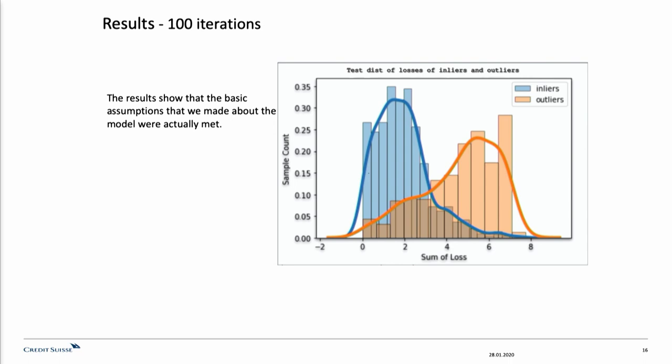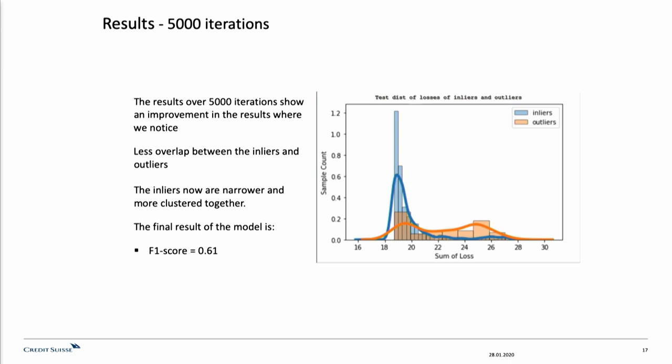And these are our results after 5000 iterations. We see less overlap between the inliers and outliers, and the inliers now are narrower and more clustered together.